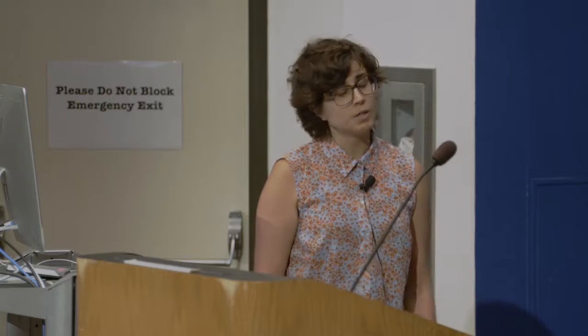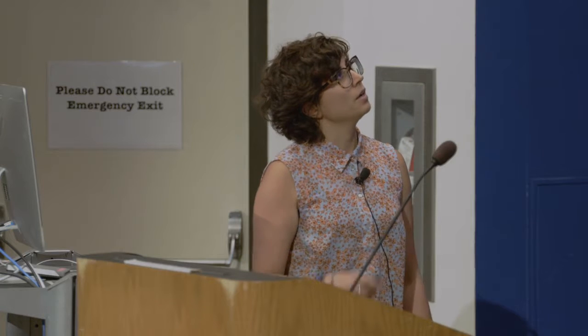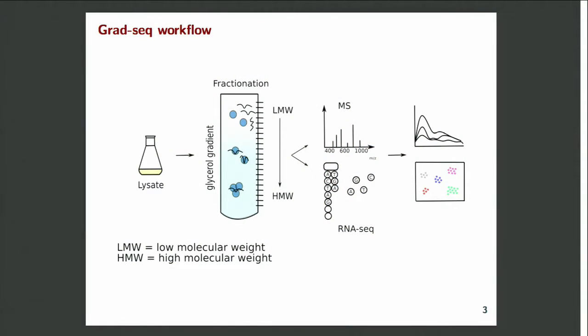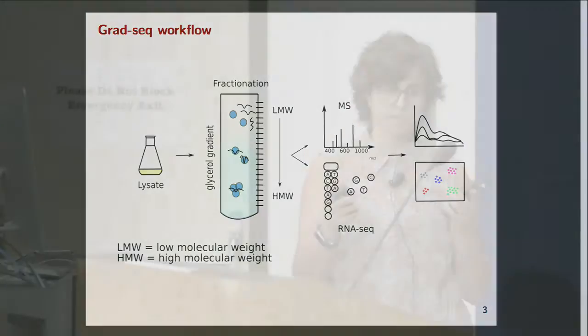After this fractionation, for each of the 21 fractions generated, mass spectrometry and RNA sequencing were performed. This allows the reconstruction of the in-gradient behavioural profiling of each RNA and protein. With further analysis like cluster analysis, you can also see similarities between the different molecules.